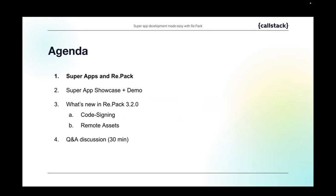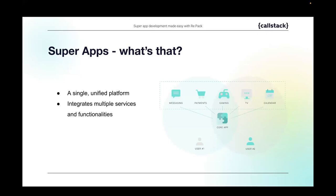Let's start with super apps. Kuba, what are super apps? A super app is an app that combines multiple services or functionalities together which aren't necessarily connected — like messaging or payments. Each of these functionalities could be a separate app on its own, but instead they're all combined into one big app. The goal of super apps is to be the only app you need on a daily basis.